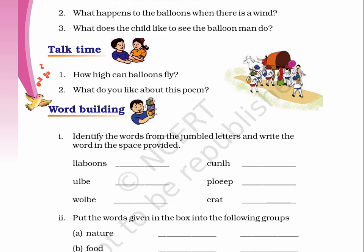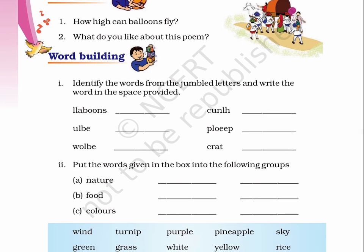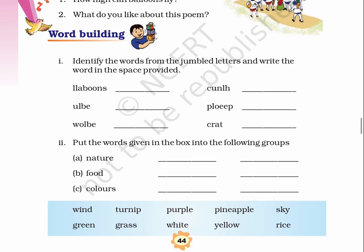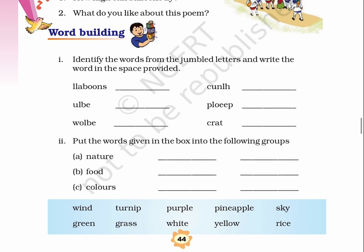Word building. Question 1: Identify the words from the jumbled letters and write the word in the space provided. Question 2, 3, 4, 5. Put the words given in the box into the following groups.